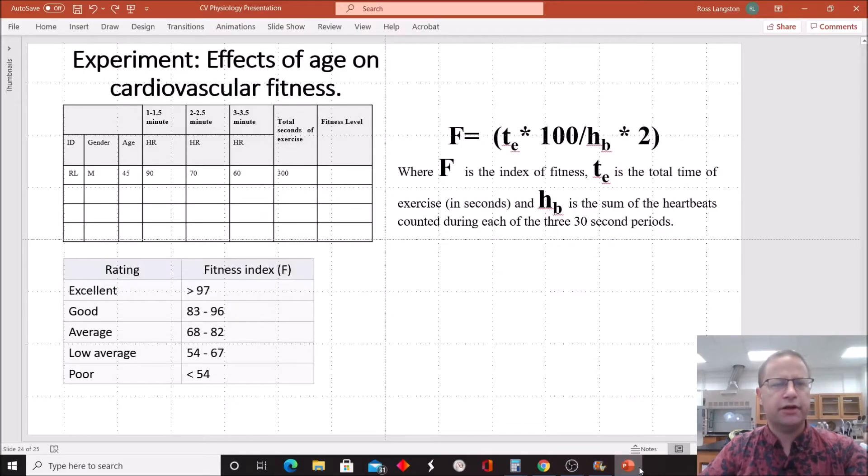So once you get all your data from the experiment entered, your data table should look something like this. You have your age in there, your gender, your heart rate at time one, time two, and time three. And this is at one minute, two minutes, and three minutes of recovery. The important thing is that these are taken at 30 second intervals, so not a whole minute, just 30 seconds worth of data.